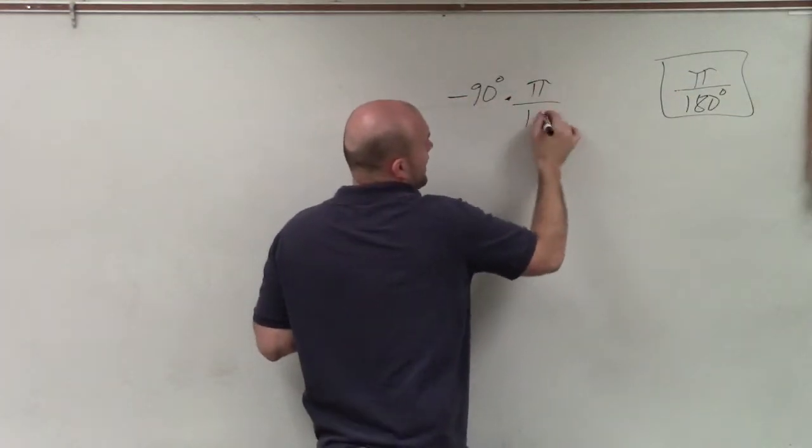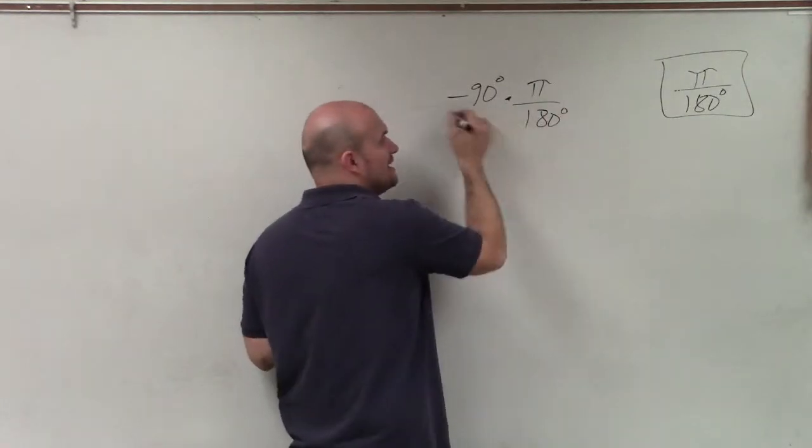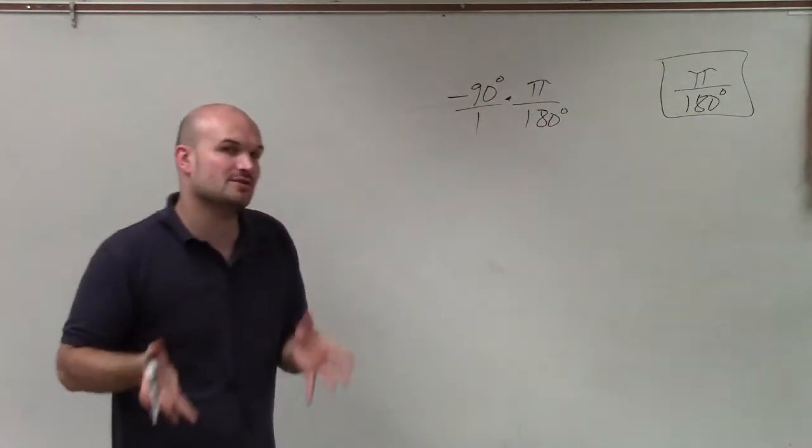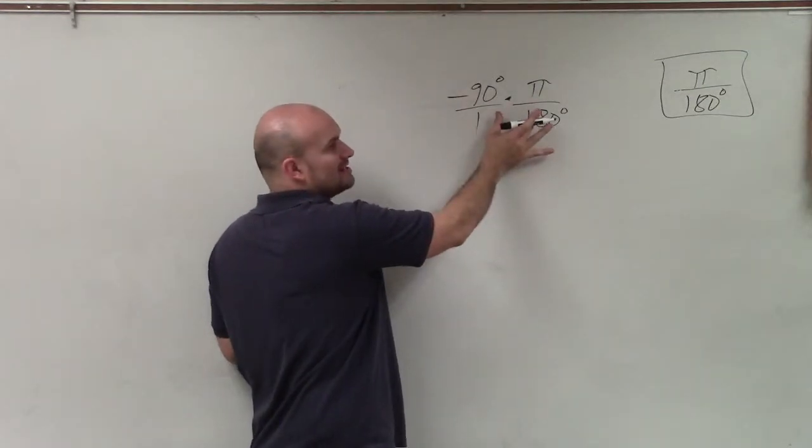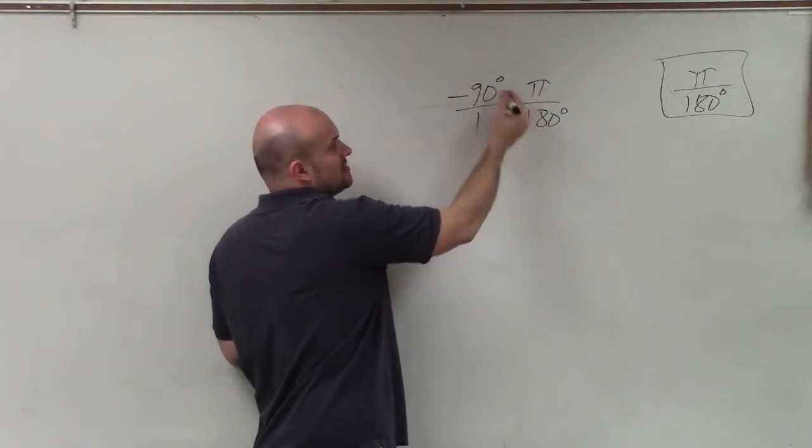So I'll say pi over 180 degrees. A lot of times I like to write that over 1, just so I know. And then I can see that since it's a product, I can now apply division across these numbers.